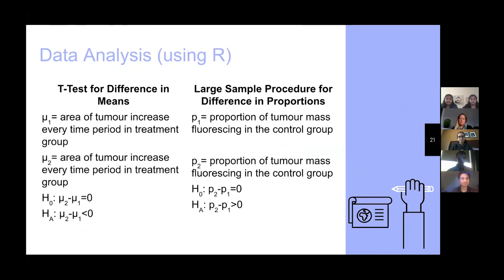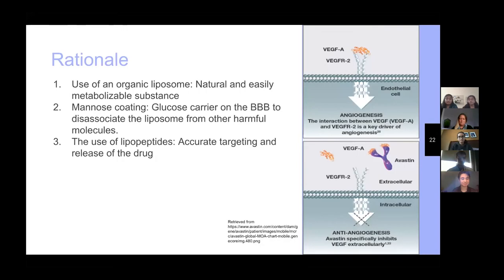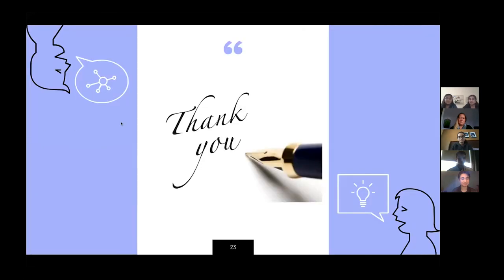To analyze our data, the first analytical test is a t-test for difference in means, in which the increase in area of the tumor for the treatment group is predicted to be lower than that of the control. The second test will be a large sample procedure for difference in proportions, indicating whether the proposed drug delivery method is more efficient in precisely delivering the drug to the tumor masses. The carrier proposed is a liposome grafted using sugars and lipopeptides that allow effective recognition by the blood-brain barrier and active targeting of the tumor cells. The proposed experiment is feasible because much of the equipment and tools required are available here at Western University, and the drug is highly metabolizable by humans. Thank you, and if you have any questions, please don't hesitate to ask.